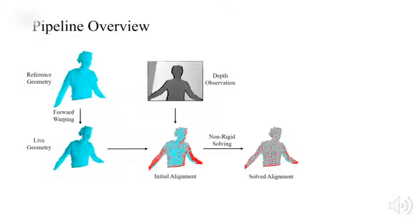Upon receiving a new depth image, the deformation field is estimated to align the live geometry with the depth observation. Here, points from the depth image are in red, while points from the live geometry are in blue.